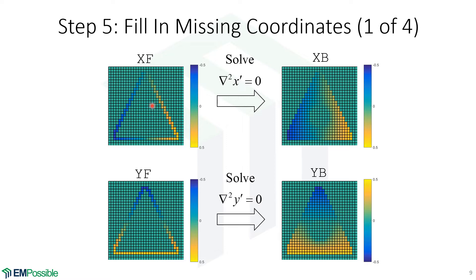Now, here's the big numerical step: we solve Laplace's equation at all the points in between, and we do this for both the X coordinates and the Y coordinates. We can see the X coordinates increasing left to right, but notice there are zeros throughout the entire object region. The same is true for Y — values increase top-down, but there are zeros where the object is. These are our transformed coordinates, and it's from those that we calculate our permeability and permittivity arrays.